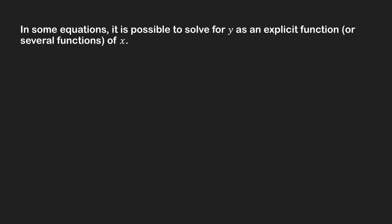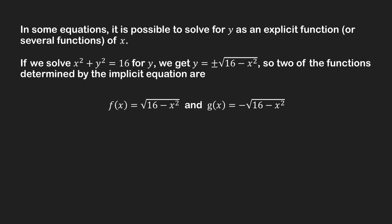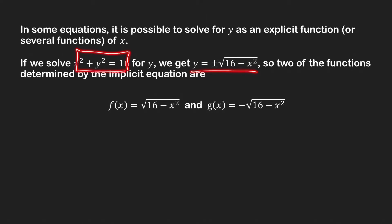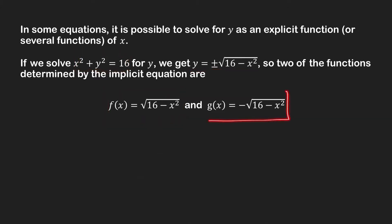In some equations it is possible to solve for y as an explicit function or several functions of x. If we go back to our first equation, x squared plus y squared equals 16, we can easily solve y in terms of x. Moving x squared to the right-hand side and taking the square root of both sides, we get plus or minus the square root of 16 minus x squared. So two functions determined by the implicit equation are f of x equal to the positive square root and g of x equal to the negative square root.